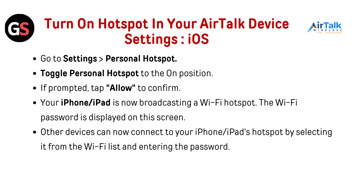To turn on the hotspot on your Airtalk iOS device, go to Settings, then Personal Hotspot. Toggle Personal Hotspot to the on position. If prompted, tap Allow to continue. Your iPhone or iPad is now broadcasting a Wi-Fi hotspot. The Wi-Fi password is displayed on this screen. Other devices can now connect to your iPhone or iPad's hotspot by selecting it from the Wi-Fi list and entering the password.